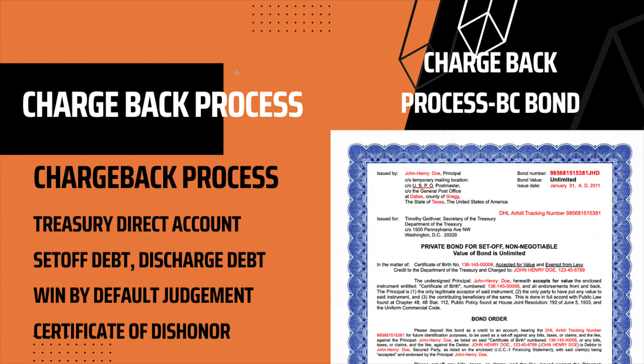Hello. I just wanted to talk about the next part of the Secured Party Creditor. The first part was the UCC-1. Hopefully you filed it and included all those documents: the common law copyright, power of attorney, security agreement, and holding harmless. Even if you didn't, you definitely need the UCC and the security agreement. The other ones are optional, but most people use them.